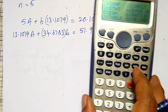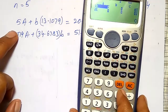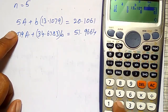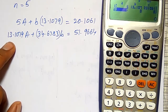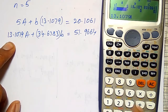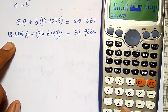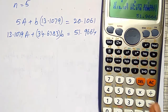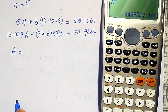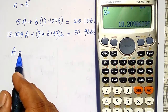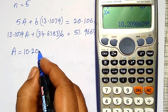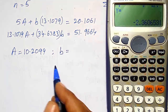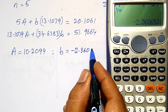In the calculator, using equation mode option number 5 (simultaneous equations), I enter the coefficients: first equation — 5, 13.1079, 20.1061; second equation — 13.1079, 34.6783, 51.9664. The solution gives capital A = 10.2099 and small b = -2.3607.